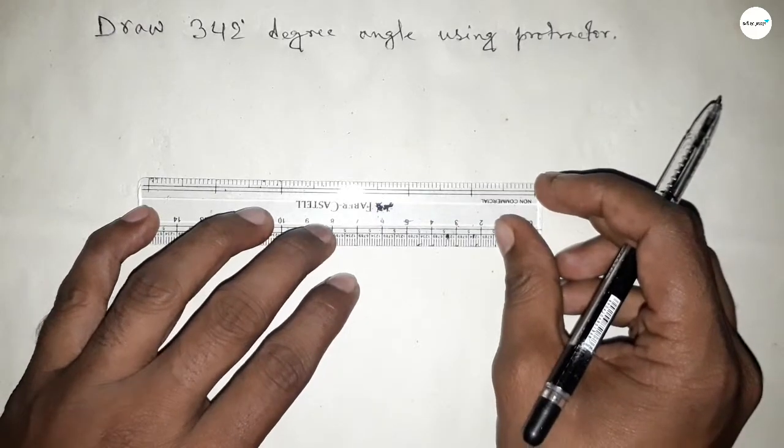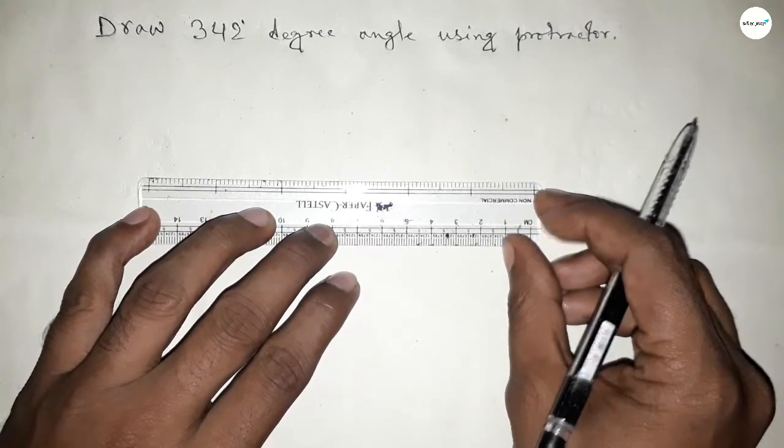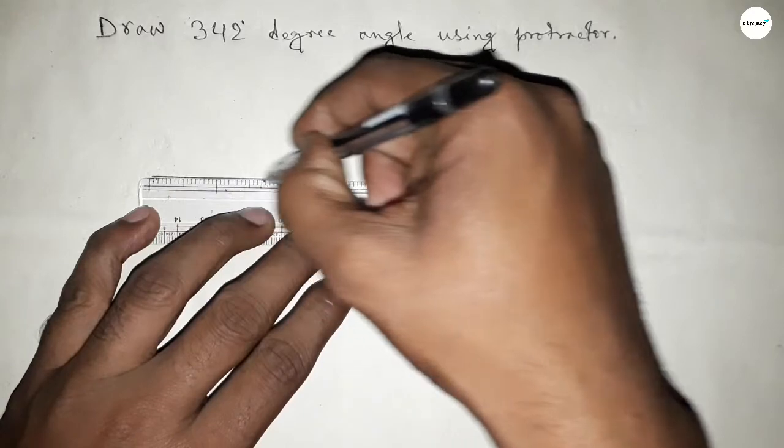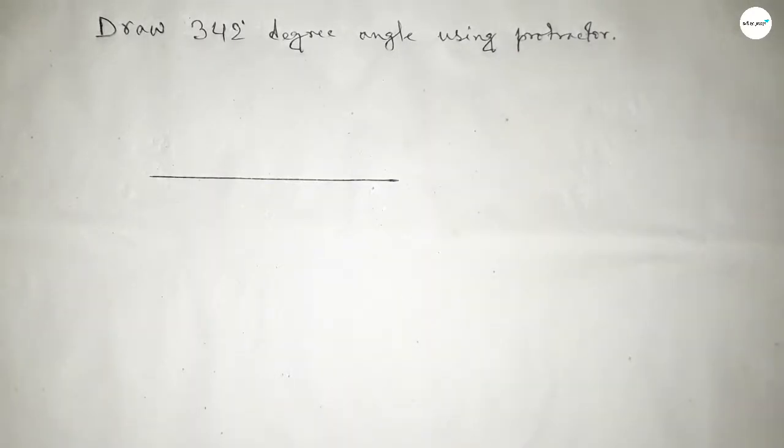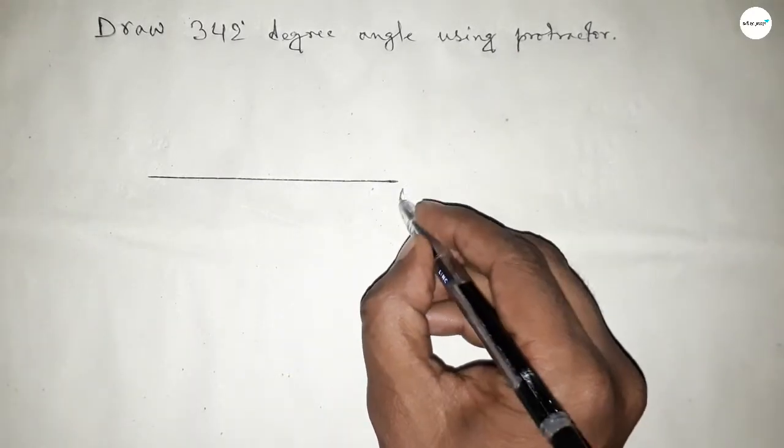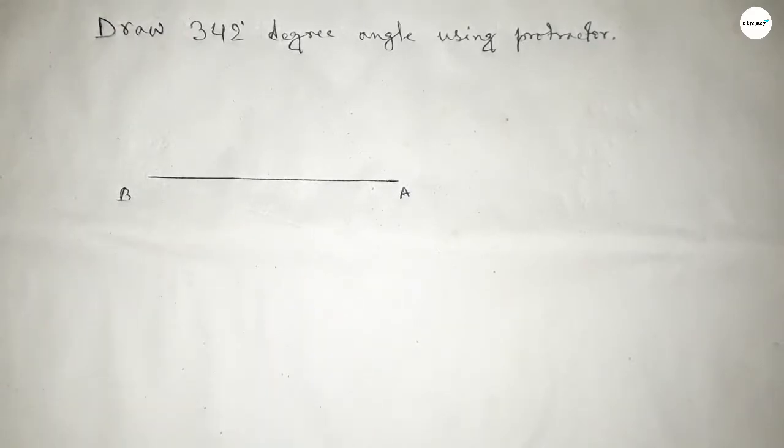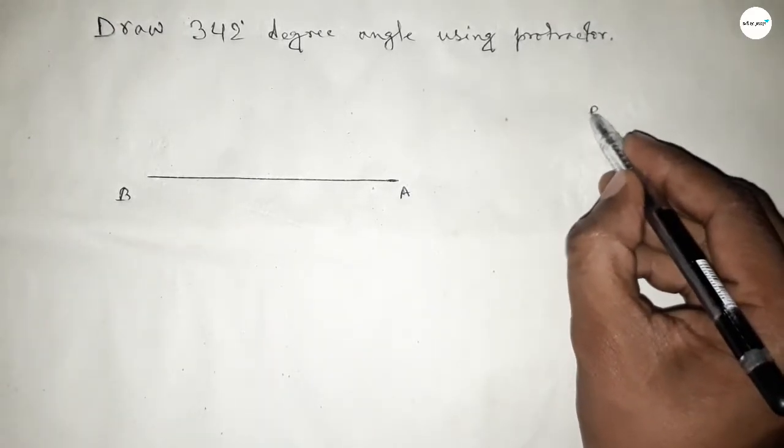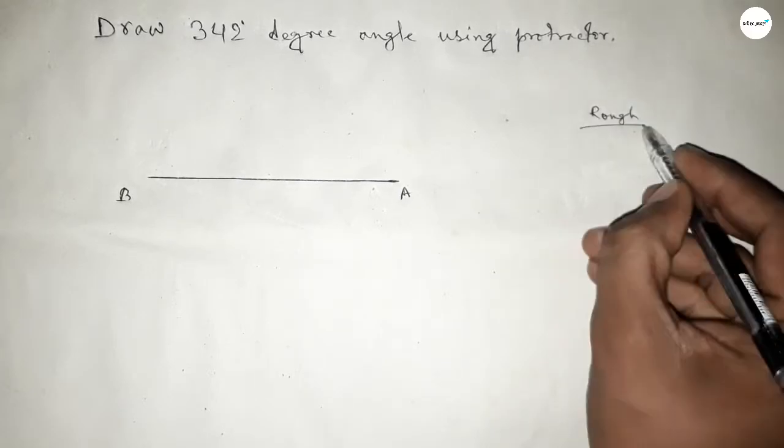So let's start the video. First of all, drawing here a straight line of any length. Taking here a point A and here point B. Now drawing here some rough space.